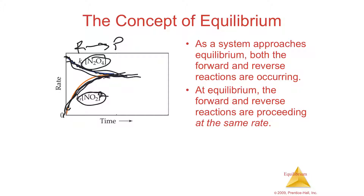But eventually they're going to stabilize — the left is making some products and the right is making some reactants and they're going to stabilize. At this point called equilibrium, the concentrations of all the substances, whether reactants or products, is going to be constant and fixed. You're not going to make more reactants and you're not going to make more products — no more products made, no more reactants made.